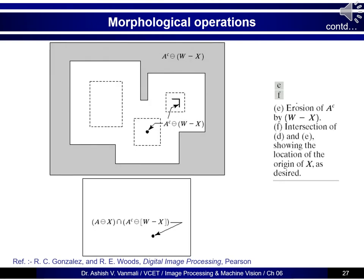In the second step, we take W minus X and erode A complement. Since W minus X is the boundary region around component X, it fits exactly around X and creates a single point. For component Y in A complement, that window will never fit, so Y totally vanishes. For component Z, which is smaller than X, the window fits at certain positions and creates some output. So after this second operation, there is a point for X, Y has vanished, and Z has some output.